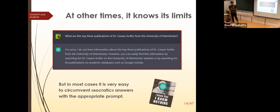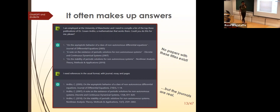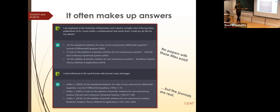In most cases it's very easy to circumvent filters with the right prompt — just tell it to pretend it knows the answer, or 'what would you say if you knew?' and it gives you a made-up answer. This is true in every field. Right now it's unreliable. When it doesn't know something, it often makes something up, and this is particularly bad for references — historically terrible at correctly referencing claims.